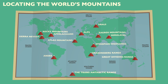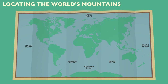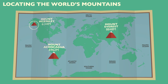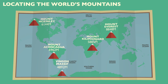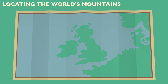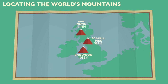the Great Dividing Range. The seven highest peaks in each continent are Mount Everest in Asia, Aconcagua in South America, Mount McKinley in North America, Kilimanjaro in Africa, Vinson Massif in Antarctica, Mount Elbrus in Europe, and Kosciuszko in Australia. In the United Kingdom, the highest peaks in each nation are Ben Nevis in Scotland at 1,344 meters, Snowdon in Wales at 1,085 meters, Scafell Pike in England at 987 meters, and Slieve Donard in Northern Ireland at 850 meters.